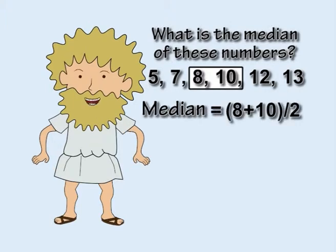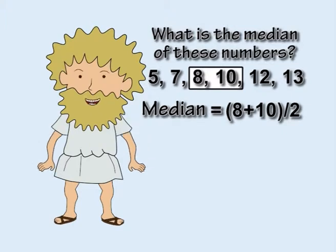To calculate the median, add this pair together and divide by two. Eight plus ten equals eighteen, and eighteen divided by two equals nine, which is the median.